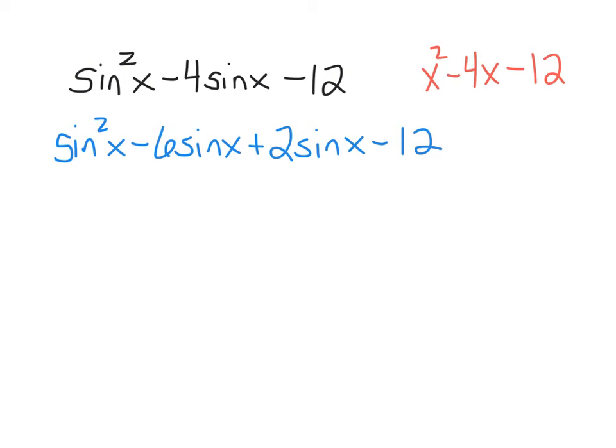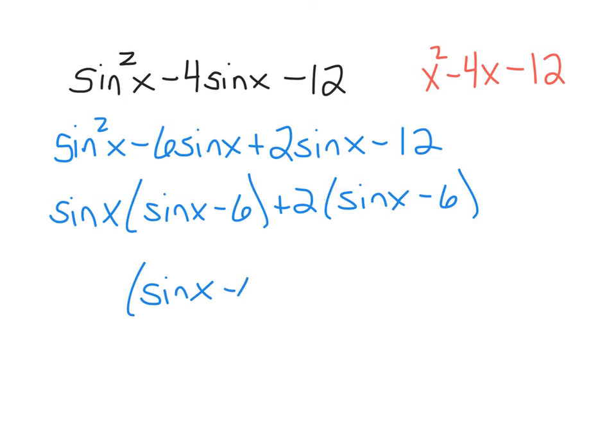Now, I'm going to take a sine of x out of the first two. And I'm left with a sine of x minus 6. I'm going to take a positive 2 out of the final two, right third and fourth term there. And I'm left with a sine of x minus 6. And now you see that there's two terms left, both of which have a sine of x minus 6. And then when you factor out that sine of x minus 6 out of both those terms, you're left with a sine of x plus 2.